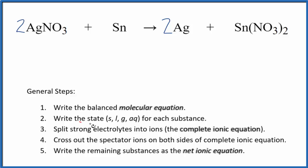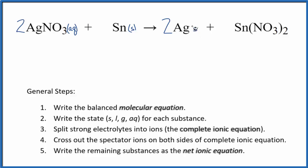Next, we need to write the states for each substance. For nitrates, if you know your solubility rules, nitrates are very soluble — aqueous, they dissolve and dissociate. Tin is just tin metal, so that's going to be a solid. Silver will just be silver metal — that'll be a solid. Then we have another nitrate, this tin-2 nitrate, so that'll dissolve and split apart into its ions, so that's aqueous.